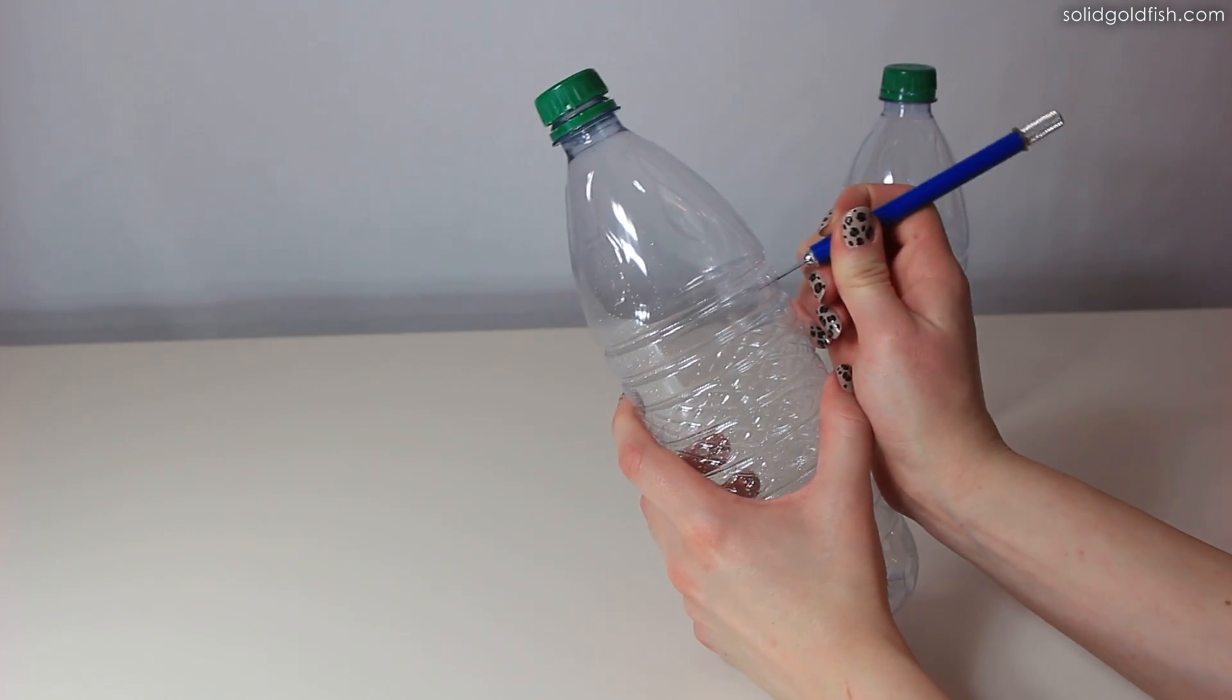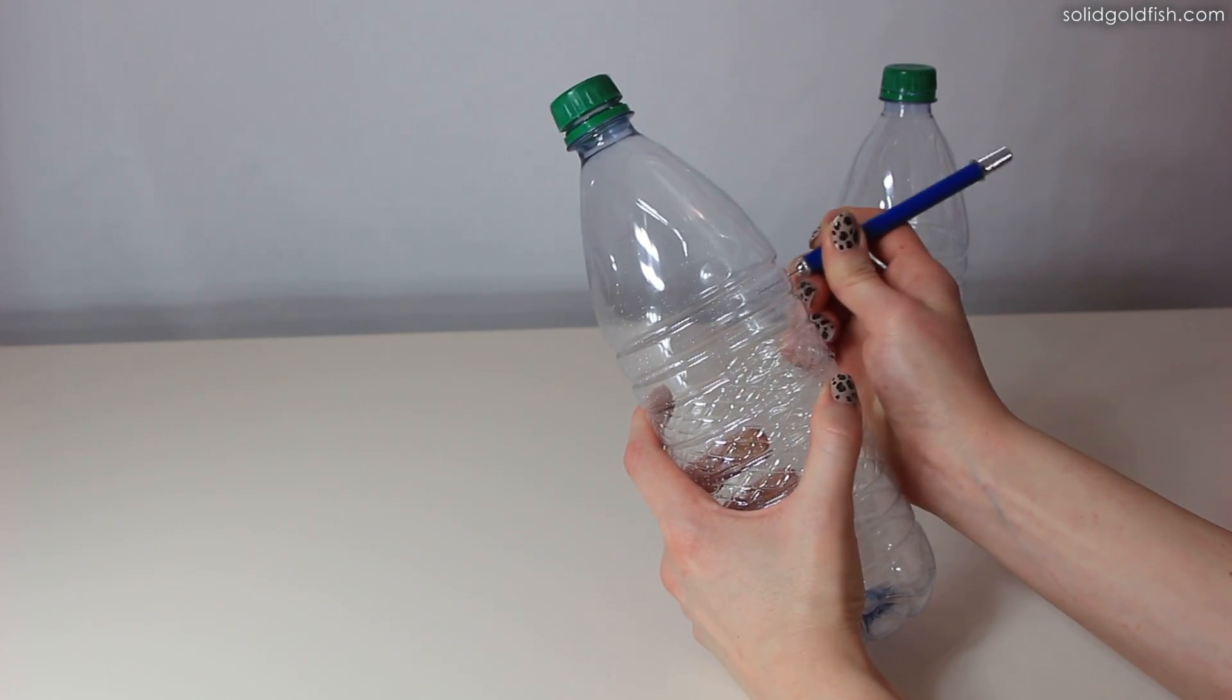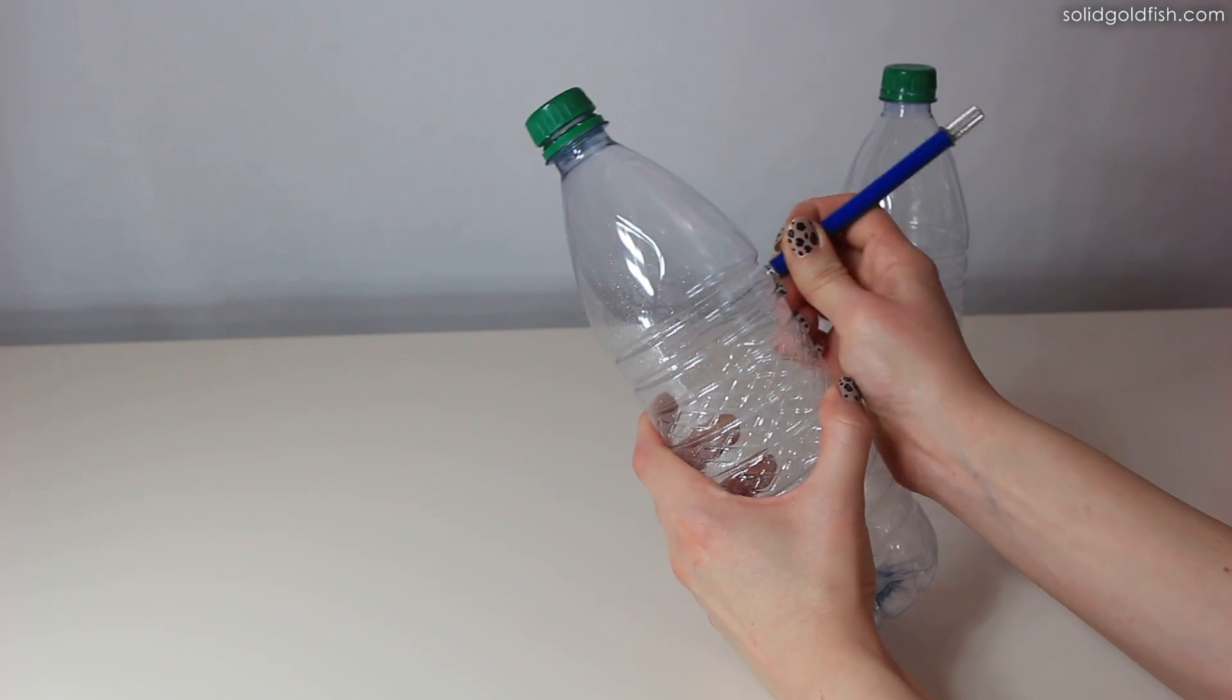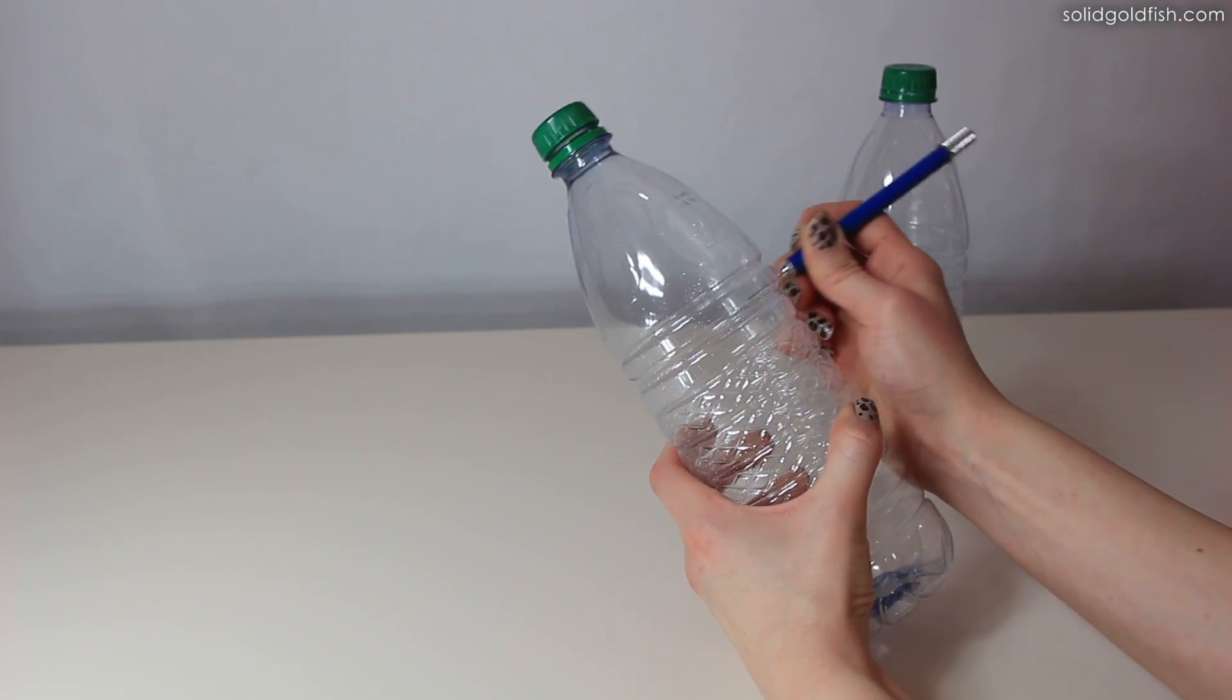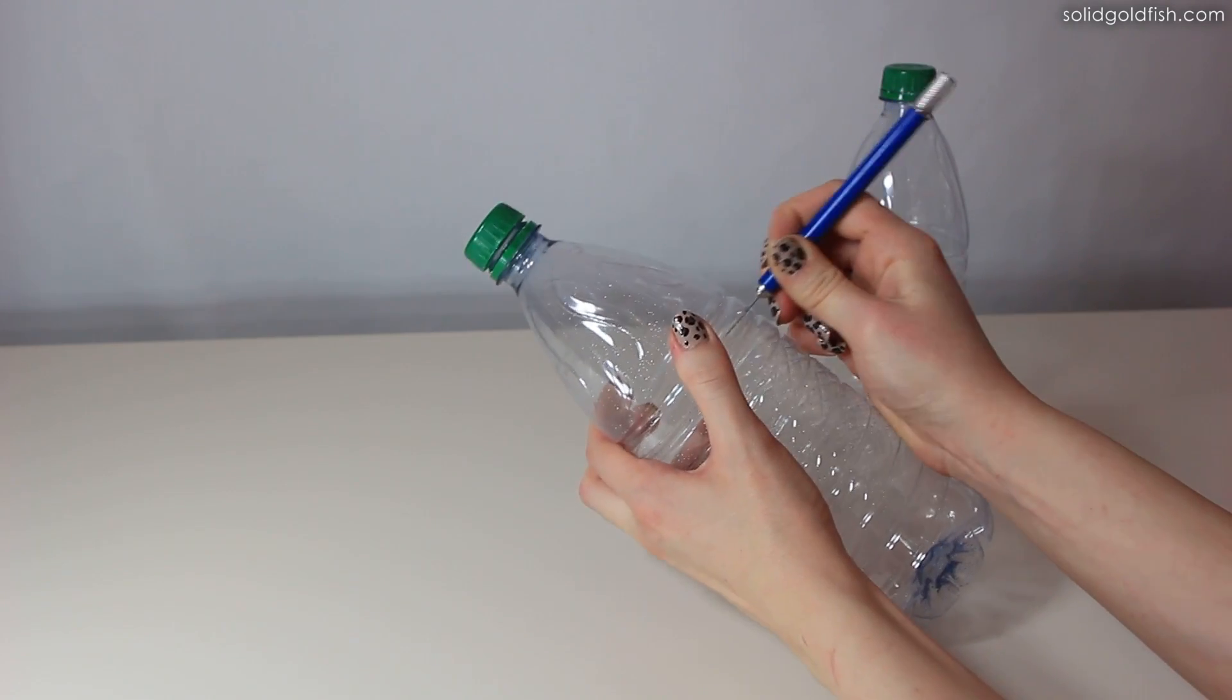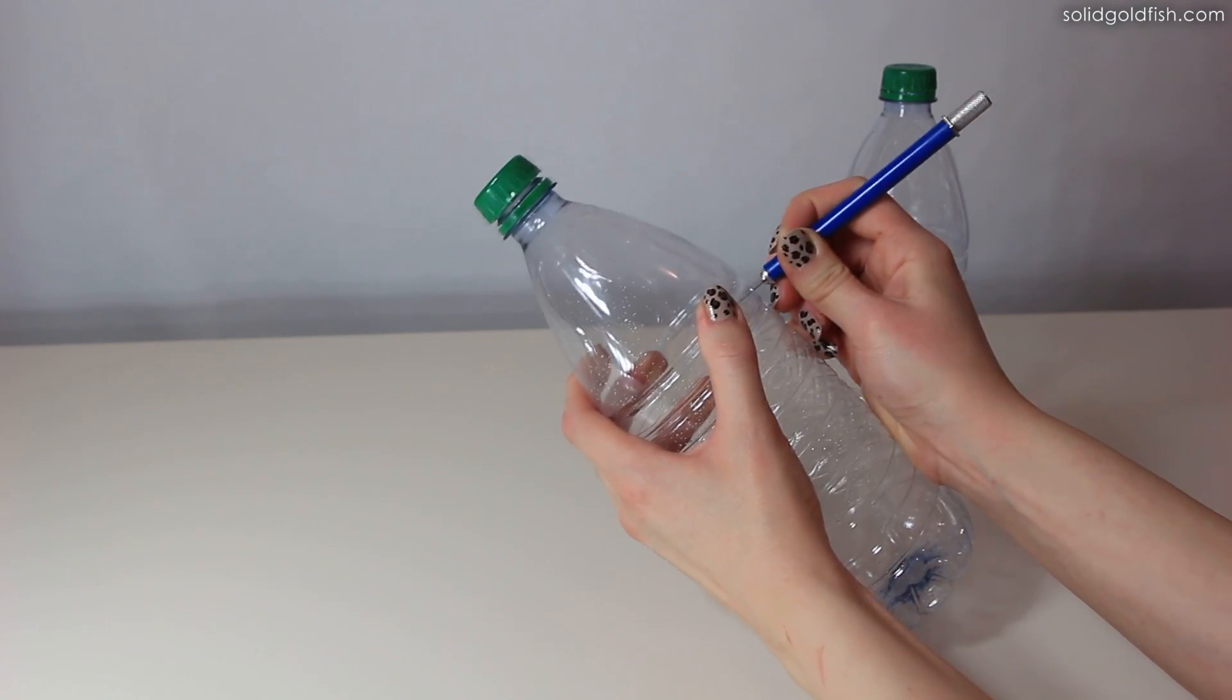Then carefully cut the bottom six inches off of the second bottle and discard the top piece. This second bottle will become the base for the hatchery.